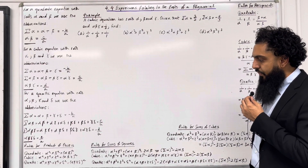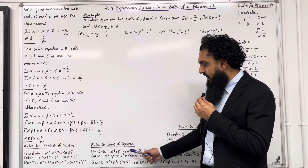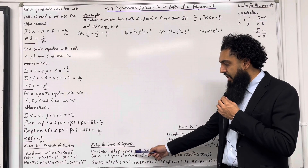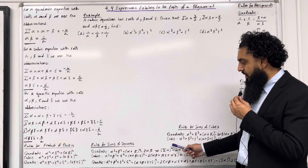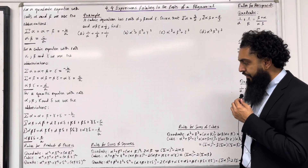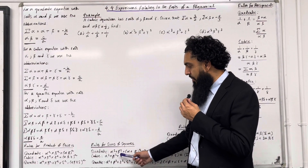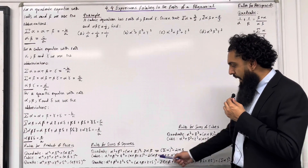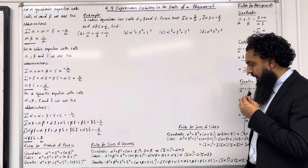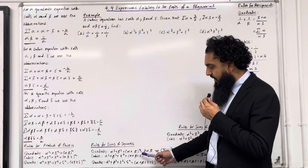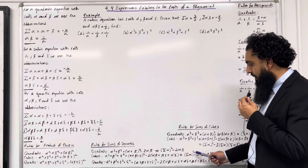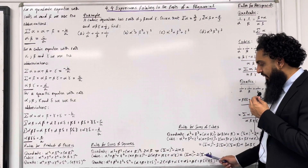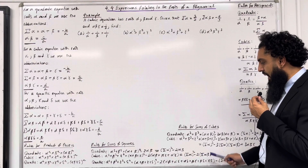Rules for sums of squares. For a quadratic, alpha squared plus beta squared is equal to (alpha plus beta) squared minus two lots of alpha beta, which is the same as writing (sum of alpha) squared minus two lots of alpha beta. For a cubic, alpha squared plus beta squared plus gamma squared is equal to (alpha plus beta plus gamma) squared minus two lots of (alpha beta plus beta gamma plus alpha gamma), which is equal to (sum of alpha) squared minus two lots of sum of alpha beta.